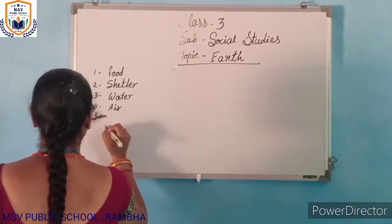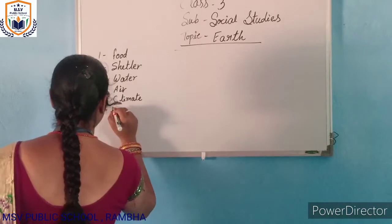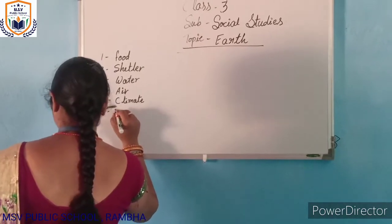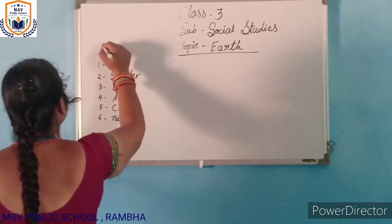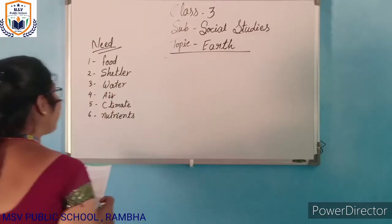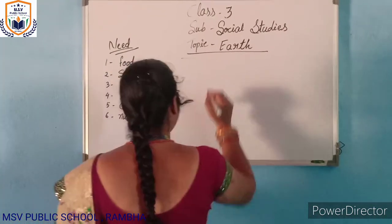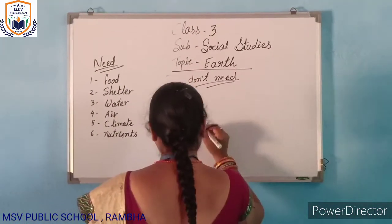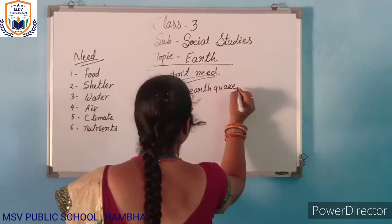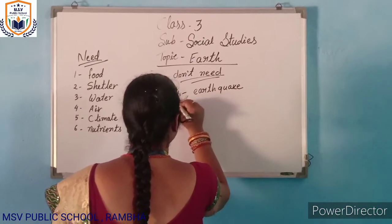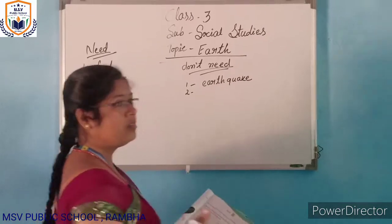Space — rehne ke liye. Aur kya need karte hain? Climate. Aur kya need karte hain? Nutrients. Aur kya need karte hain? Yerthi — Earth. Aur kya need karte hain? Makaan — house.